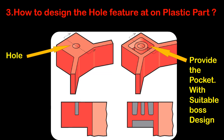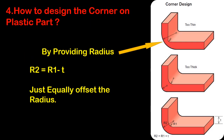Third question: how to design the hole feature on a plastic part? If we have to provide a hole in a thick area on the component, just provide a pocket with a suitable boss design and apply continuous thickness outside the hole and pocket, as shown in the figure.